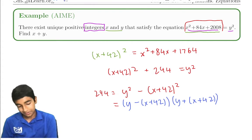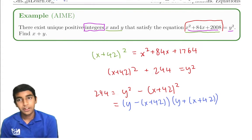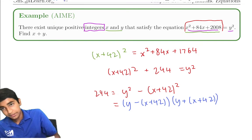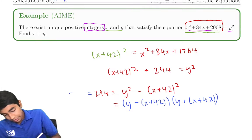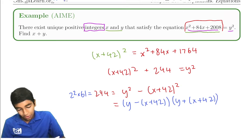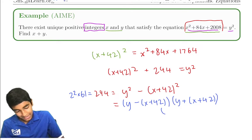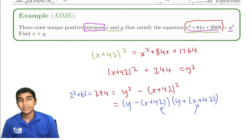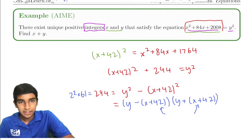Cool. What are the factors of 244? 244 is 2² × 61, and those must be these values right here.